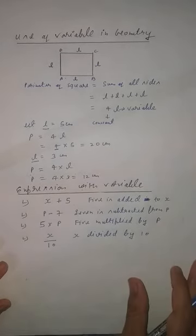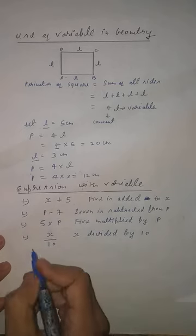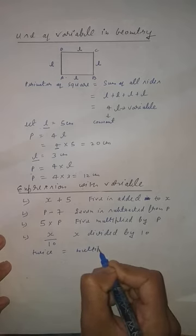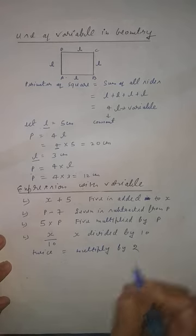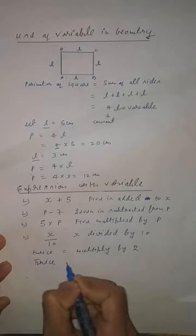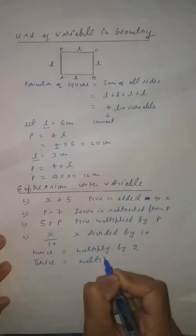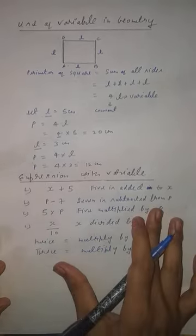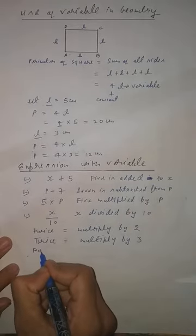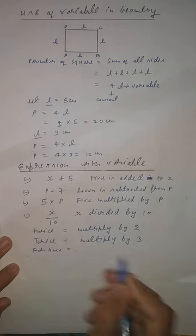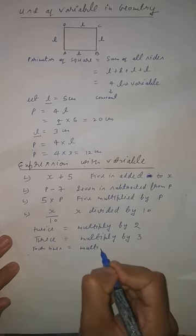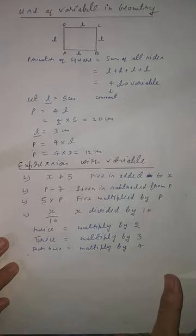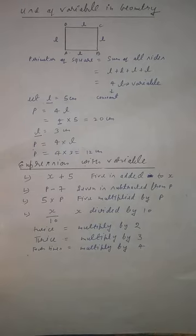One important thing: 'twice' means multiply by two, 'thrice' means multiply by three, 'four times' means multiply by four, 'five times' means multiply by five, 'six times' means multiply by six.